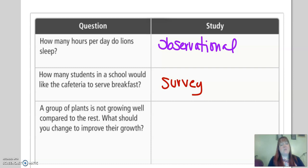And then finally, a group of plants is not growing well compared to the rest. What should we change to improve their growth? This is our statistical question and we could do an experiment because it wouldn't be immoral to do an experiment on plants. If we kill a couple plants, it's not the end of the world, right? So we can totally do an experiment to see which treatment for these plants would work best.